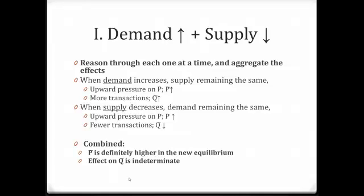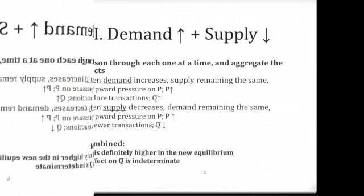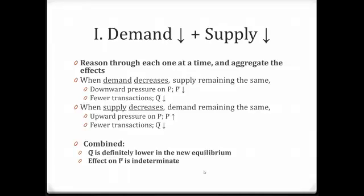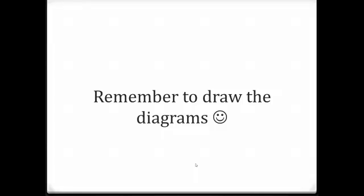If you have an increase in demand together with a decrease in supply, combined you can say for sure that equilibrium price will be higher, while the effect on equilibrium quantity is indeterminate. If you have lower demand together with lower supply, you can say for sure that there will be fewer transactions, so equilibrium quantity will be lower, while the effect on equilibrium price is indeterminate. Please remember to draw the diagrams and make sure you see how these qualitative discussions show up in diagrammatic form.